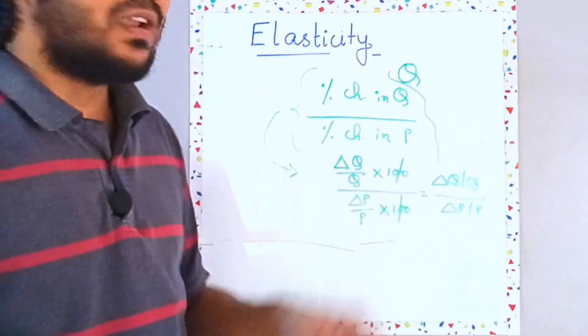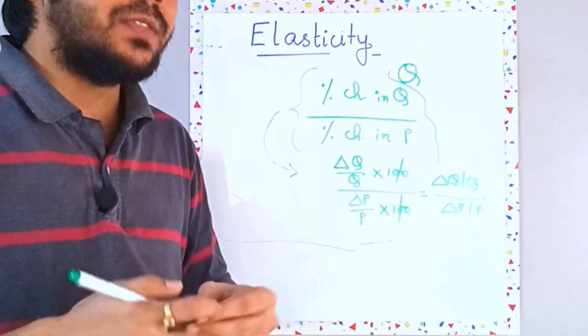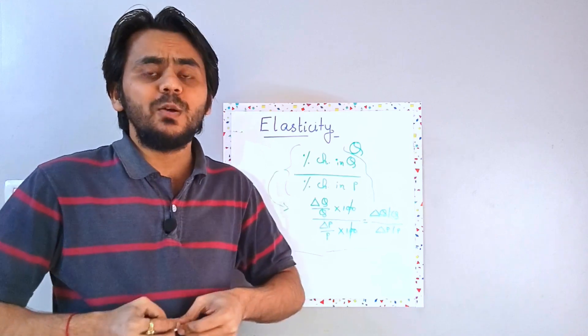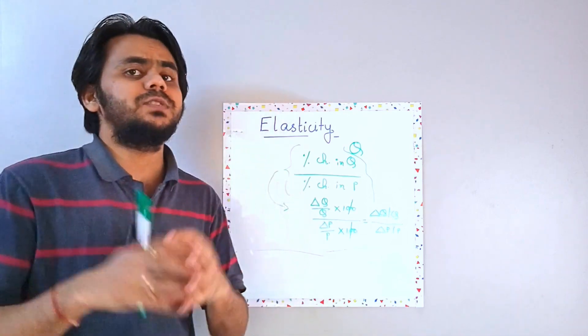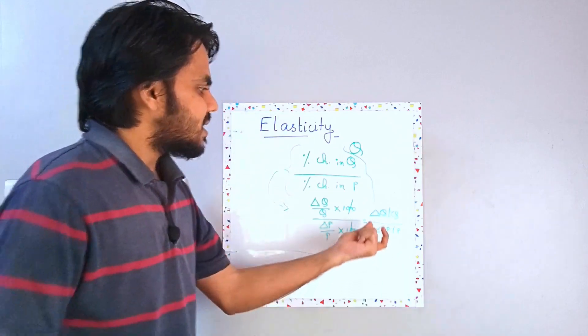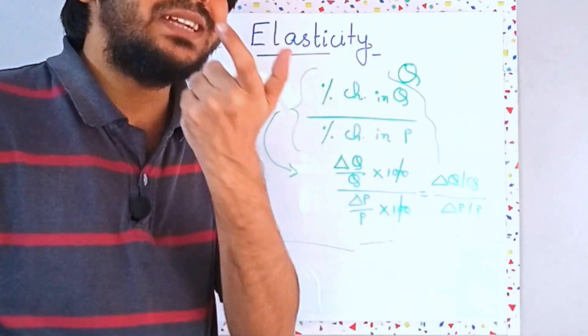Now the moment I write delta it should strike in your brain that there is going to be some amount of calculus coming over here. There is some amount of D coming over here. So this delta is for a finite change.